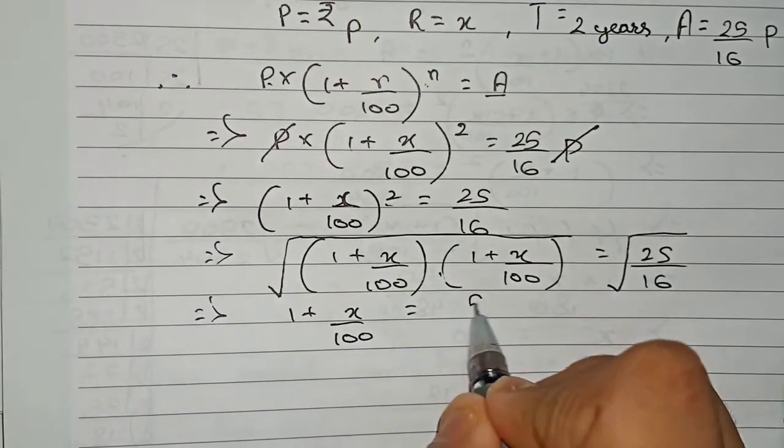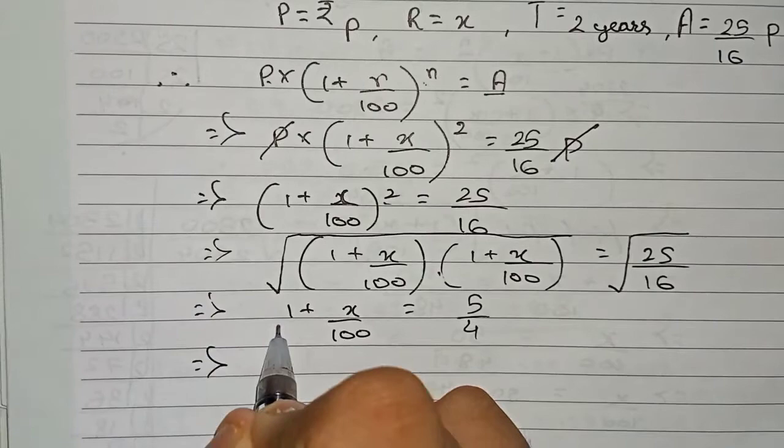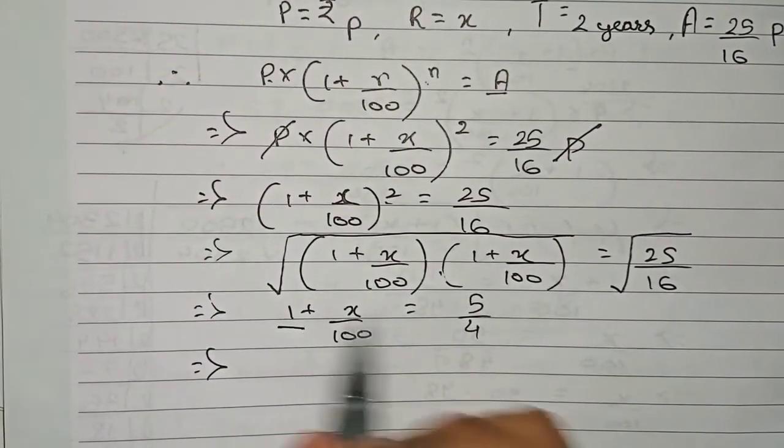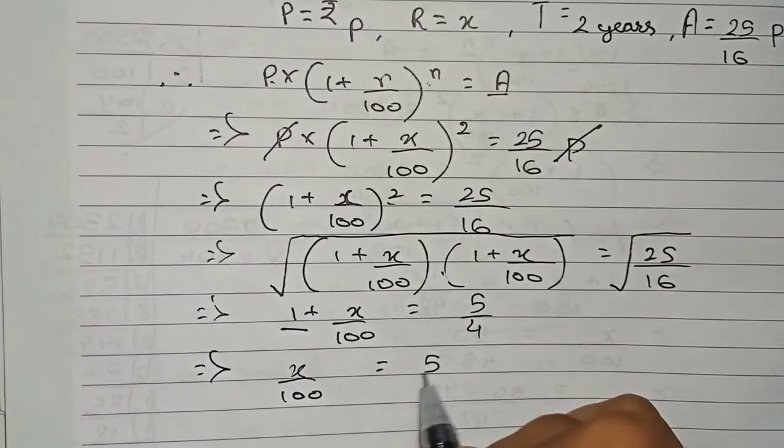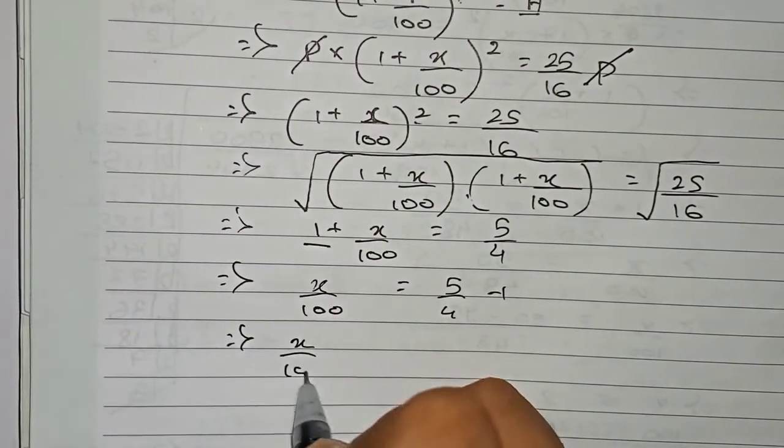Square root of 25 is 5, and square root of 16 is 4. Now we first take this 1 to this side, so it goes for subtraction as it is in addition here. So x by 100 equals 5 by 4 minus 1.